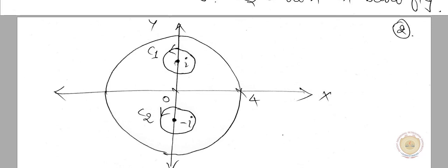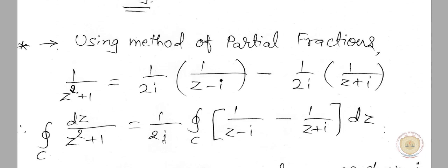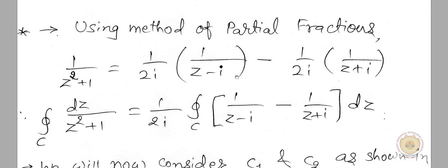I have simply considered the circle C1 with center at i and radius 1/2. You can consider any radius, provided that the intersection of C1 and C2 is the empty set. With that in mind, focus on the integrand 1/(z² + 1), which can be split into two parts: (1/2i) · 1/(z − i) minus (1/2i) · 1/(z + i).